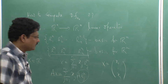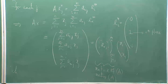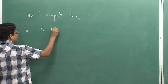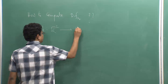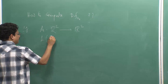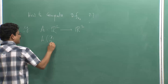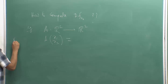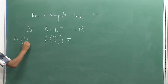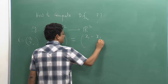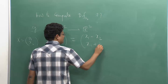Let me show you one example in today's lecture. Let us take the operator A from R^2 to R^2, where A of (x1, x2) is given by (x1 minus x2, x1 plus x2). We will do this exercise for df(x naught).